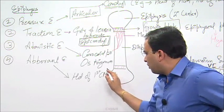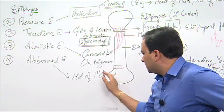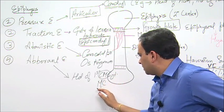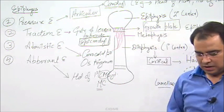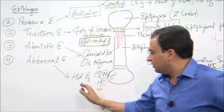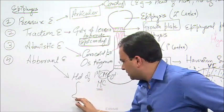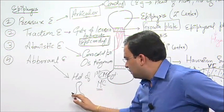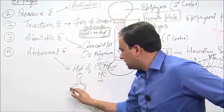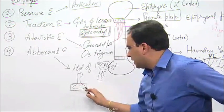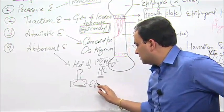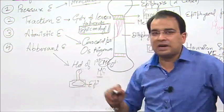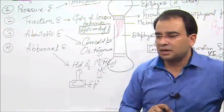At the head of the first carpometacarpal joint — basically the first metacarpal — when you look at the first metacarpal, the base of the first metacarpal is regarded as the epiphysis. This base is the epiphysis; the head region is not the epiphysis in the first metacarpal.